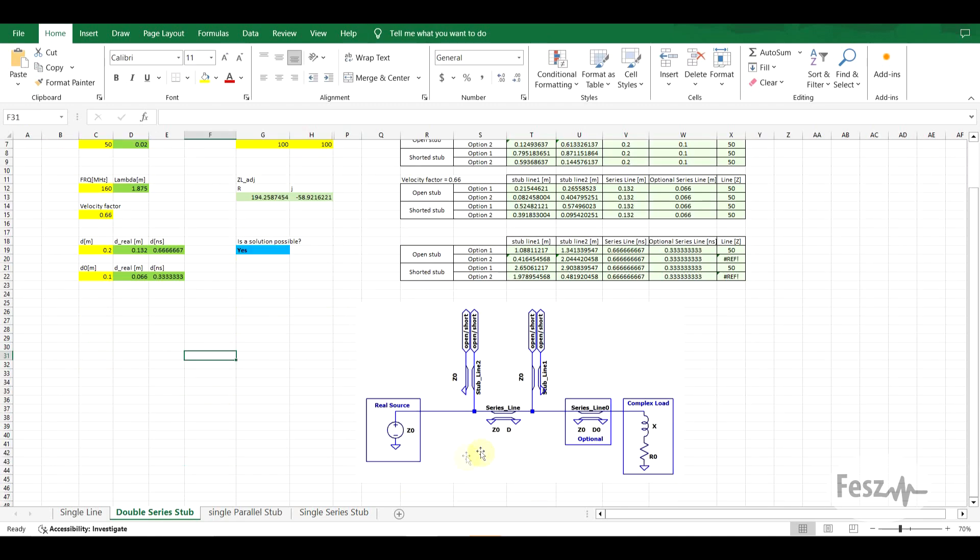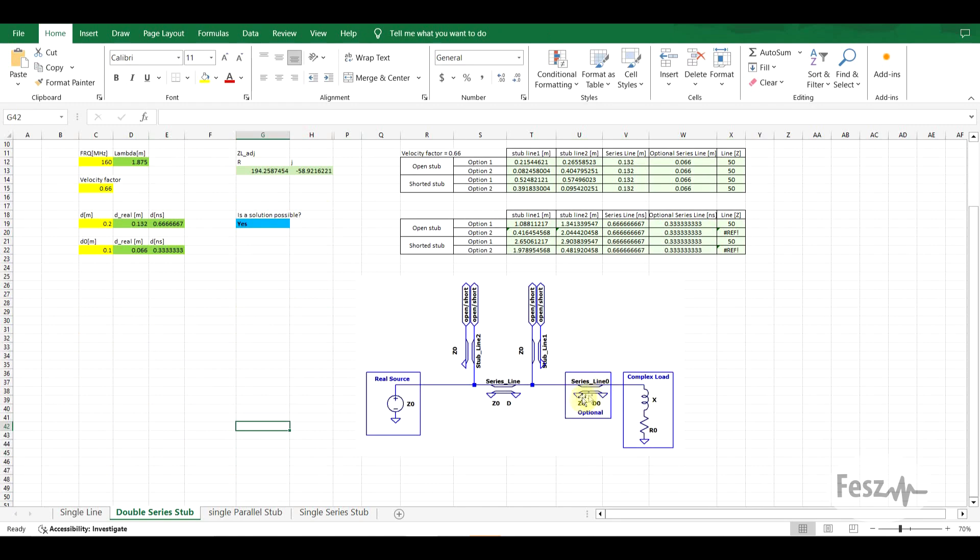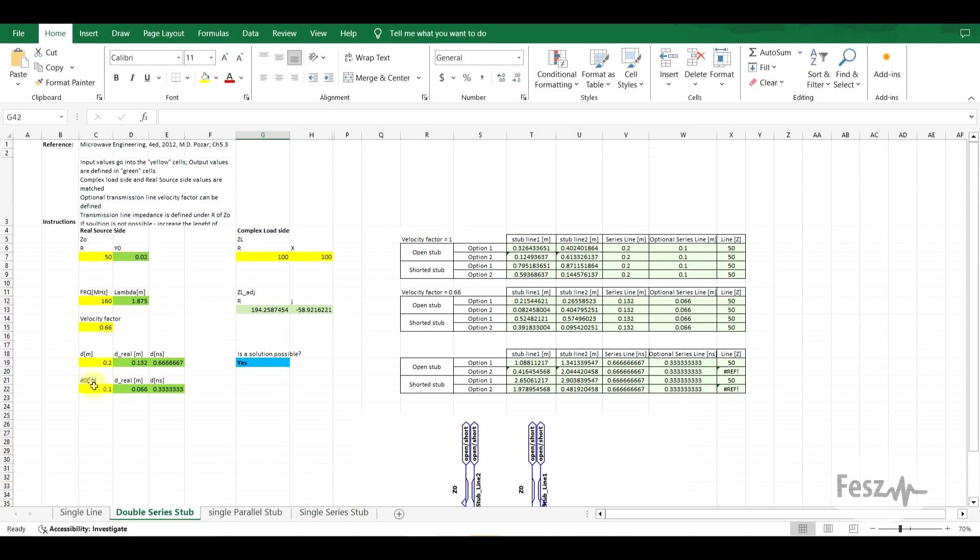Just as an observation for the two stub calculation sheet, based on the exact complex load that you're trying to connect to, it is possible for no solution to exist, so this is checked under this parameter. If there is no solution possible, then an extra bit of optional series line can be inserted in between the matching circuit and the complex load, so this is defined under the D0 parameter. I will not be going into the details of the various calculations since I will probably get something wrong, but if you check out the reference that should give you all the necessary details.